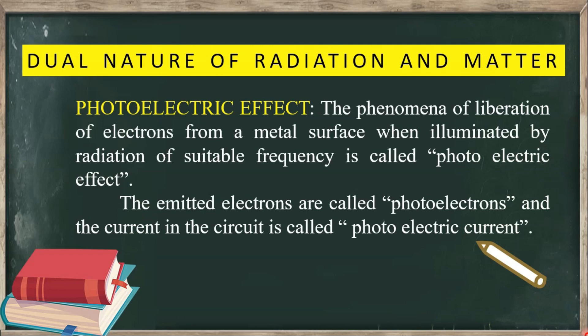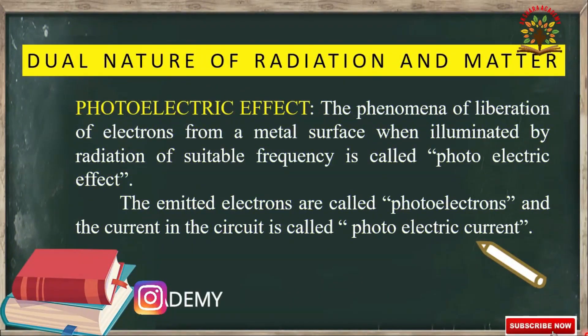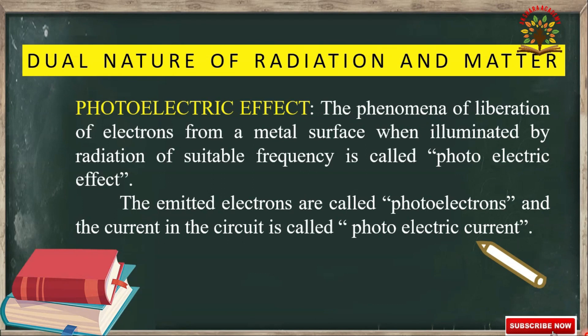When light is incident on a metal surface, electrons are ejected from the surface of the metal. This phenomenon is called the photoelectric effect, and the emitted electrons are called photoelectrons.